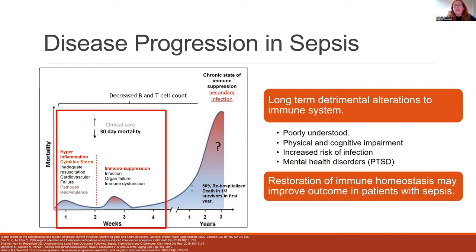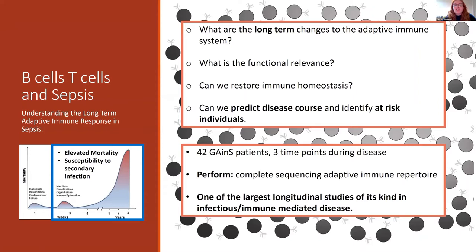This highlights an ongoing state of immune suppression in sepsis patients that we don't understand. Patients also suffer from physical and cognitive impairment and often develop mental health disorders, quite commonly PTSD. If we can begin to understand this long-term disease progression in sepsis, we will go some way to improving outcomes and perhaps restoring the immune system to a state of homeostasis. My research is primarily focused on the adaptive immune system, studying those long-term changes that might underpin susceptibility to secondary infection and death at the three-to-four-month period.